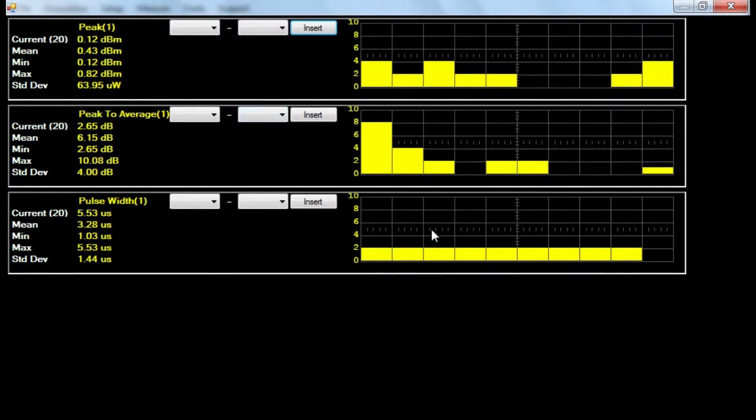The 8990B can also make pulse to pulse comparison. For example, for peak measurement, I am comparing the last pulse to the first pulse. The results will be shown here. For peak measurements, this will also represent the droop of the pulse train or cluster.